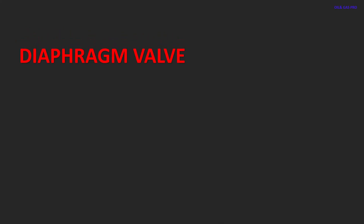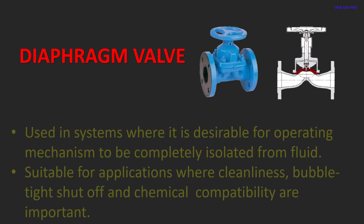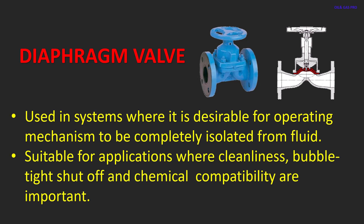Diaphragm valve. Diaphragm valve is used in systems where it is desirable for the operating mechanism to be completely isolated from the fluid. Suitable for applications where cleanliness, bubble-tight shut-off, and chemical compatibility are important.